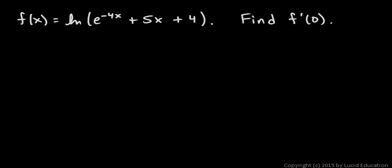f of x is equal to the natural log of e to the negative 4x plus 5x plus 4, and we're told to find f prime of 0. Now we have a composite function here, so if we want to find f prime of x, we need to differentiate and use the chain rule.